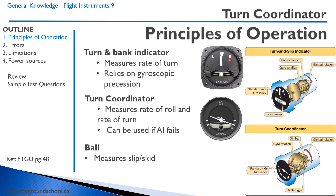Secondly, the turn coordinator is a more modern iteration of the instrument. It measures both the rate of roll and rate of turn, and displays that information as a little airplane on the turn coordinator. It can be used as a substitute if the attitude indicator fails.